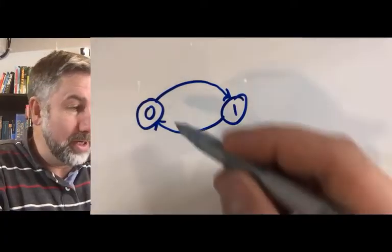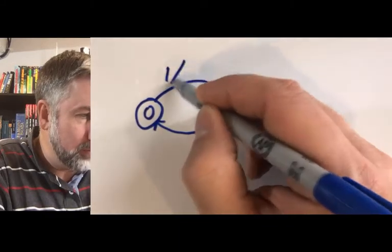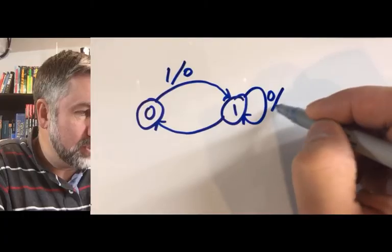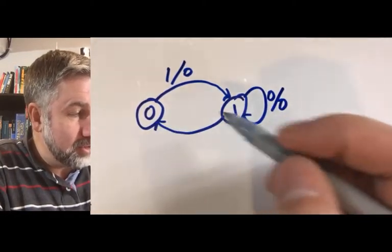Just as an example, this would be if I'm in state 0 and I get a 1, I might go to state 1 with an output of 0. If I'm in 1, I might stay in 1 with an input of 0 and an output of 0.